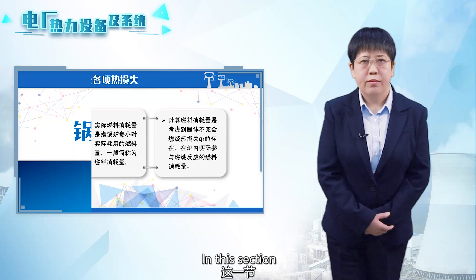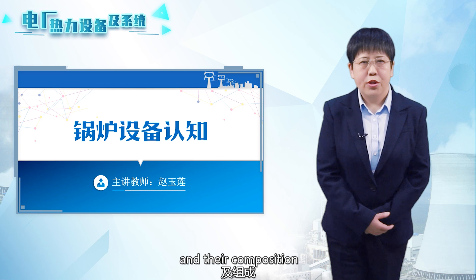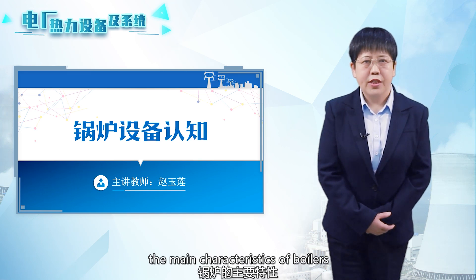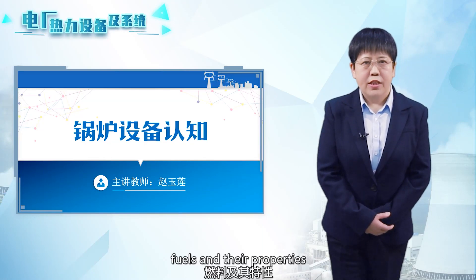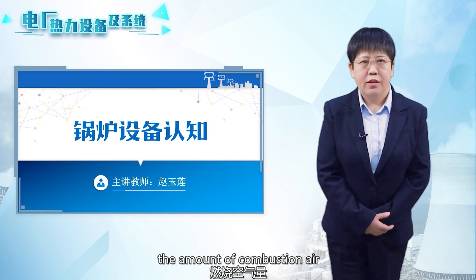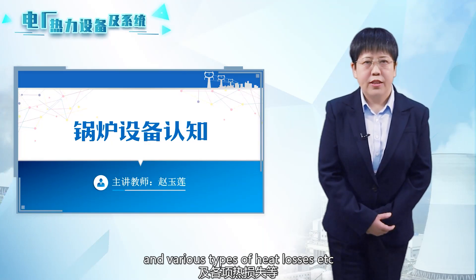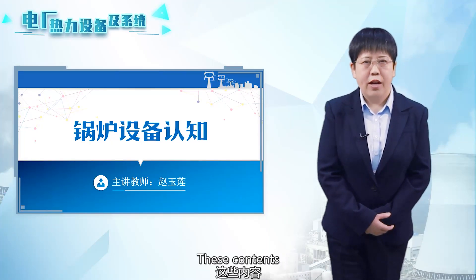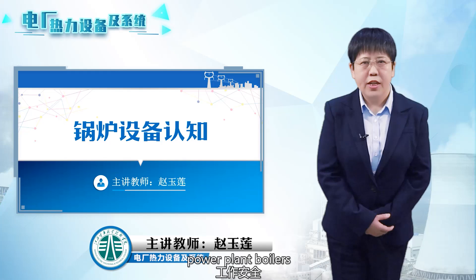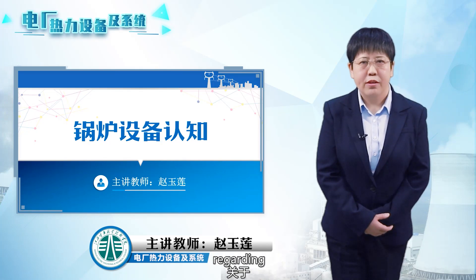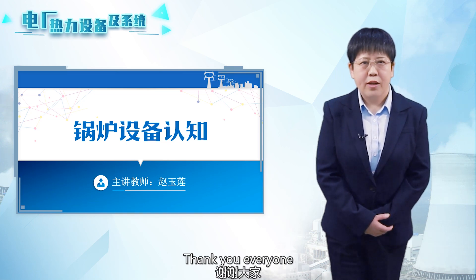In this section, we have learned about the function and composition of boilers, the main characteristics of boilers, the classification and models of boilers, fuels and their properties, the amount of combustion air, the boiler heat balance, and various types of heat losses. These contents are all related to the operational safety of power plant boilers. That concludes today's introduction to boiler equipment. Thank you, everyone.